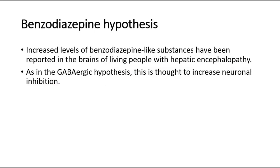Next, the benzodiazepine hypothesis. Increased levels of benzodiazepine-like substances have been reported in the brains of living people with hepatic encephalopathy. As in the GABA hypothesis, this is thought to increase neuronal inhibition as well.